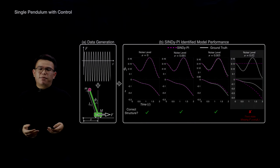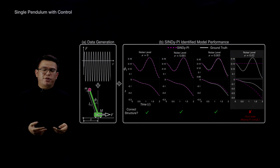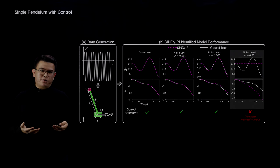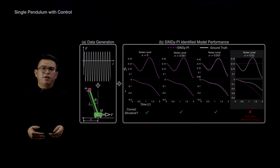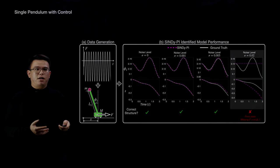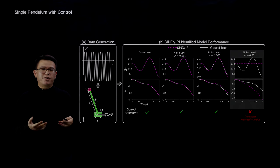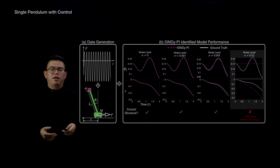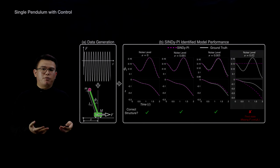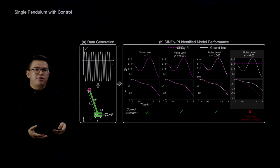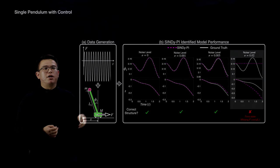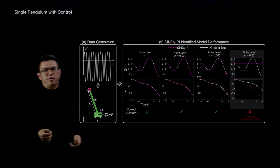The next example is a system with control input. For controls experts interested in dynamical systems with control input, CINDY-PI can also handle that. For example, the single pendulum with control input has a rational term in its ODE. When we simulated the system in MATLAB under different noise levels and provided the data to CINDY-PI, it generated the correct model, which when simulated matches really well with the ground truth.